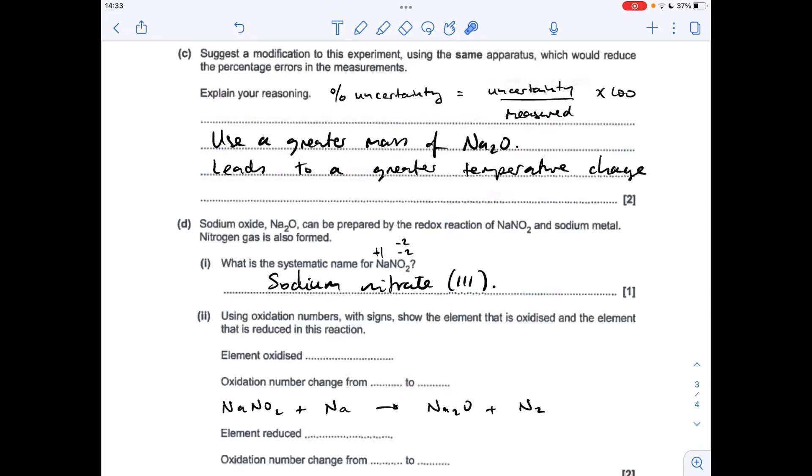So moving on to the oxidation number changes. So I've got an unbalanced equation here. So if we look at the sodium first, this sodium here, that's gone from oxidation number 0, this is an element, to plus 1. So that's obviously the oxidation process because we've got an increase in oxidation number. Moving on to the element reduced. So remember we've just worked out nitrogen's oxidation number is plus 3 in the sodium nitrate 3. It's obviously gone to 0 there because it's the element. So that's the substance reduced.